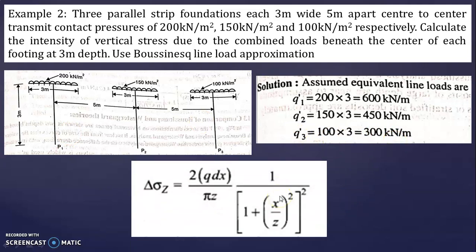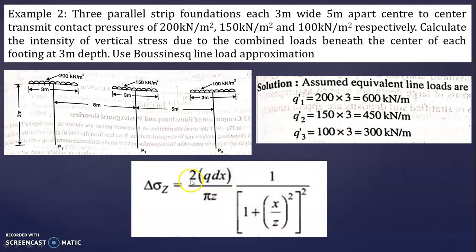For strip foundations under line loads, the formula is: Δσz = (2Q/πz) × 1/(1 + (x/z)²)². This formula is applied for each load. We will find vertical stress contributions at each point P1, P2, and P3.